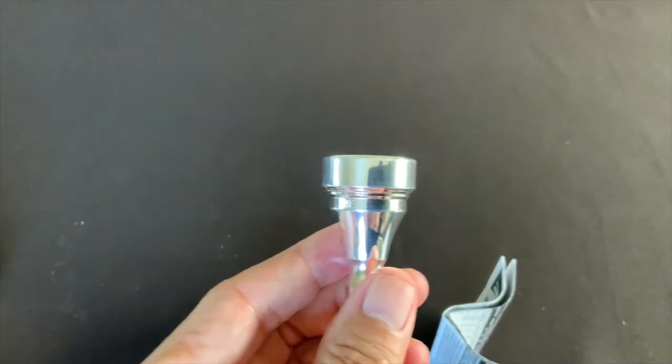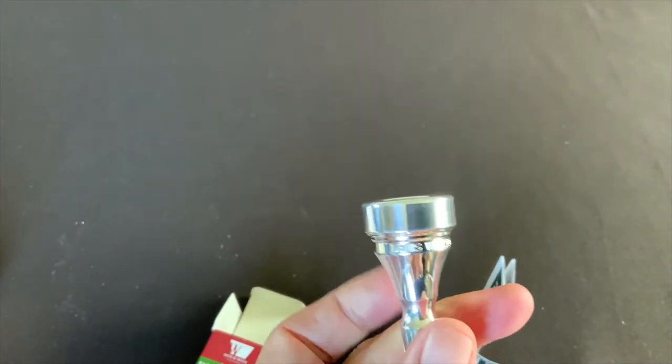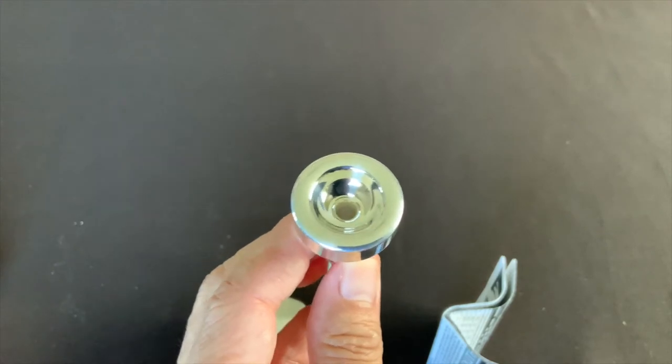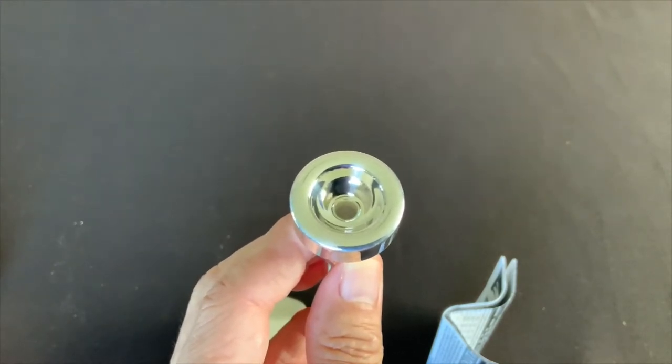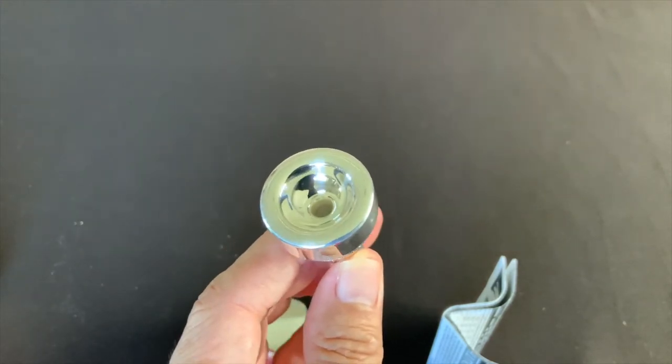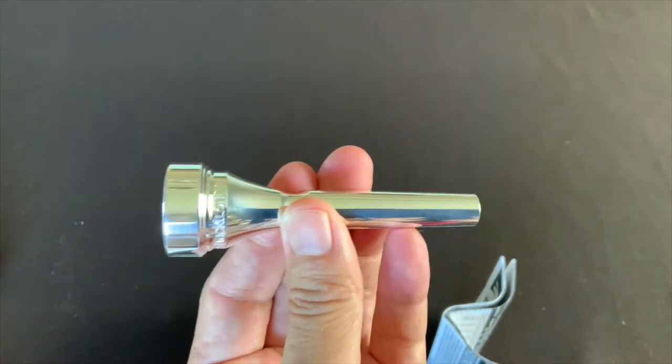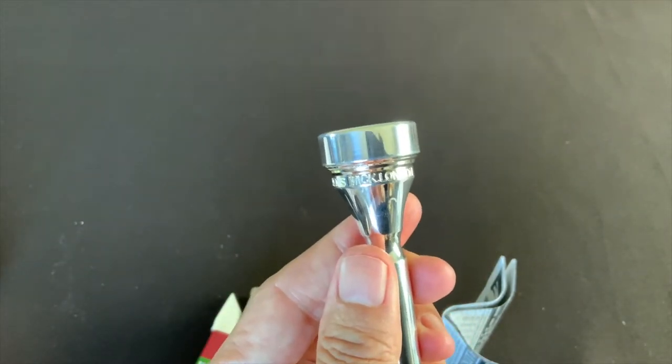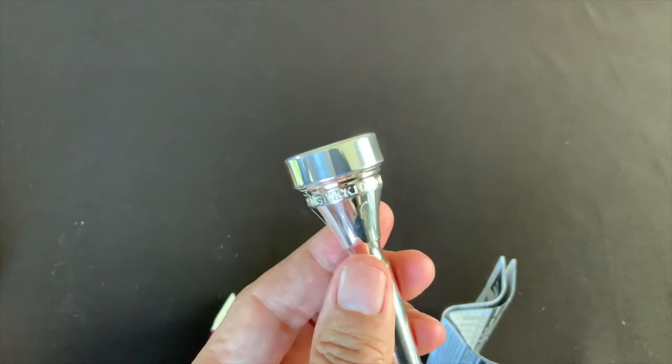So the Dennis Wick Company, they're from England. Dennis was a trombone player and he retired. So his son is taking over and running his company now. So they make mouthpieces like this, mutes. They make quite a few different types of mutes and different kinds of accessories.